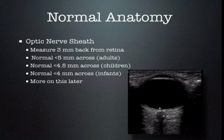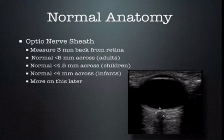The optic nerve sheath comes out the back part of the eye. To measure the diameter, we measure three millimeters back and then measure the width. The width can be somewhat challenging to measure unless the optic nerve sheath edges are very well defined. It does take a little bit of practice to get accurate measurements. Generally, you're going to vary between 0.2 and 0.3 millimeters even if you are very accurate, so there is a little bit of wiggle room in these numbers.